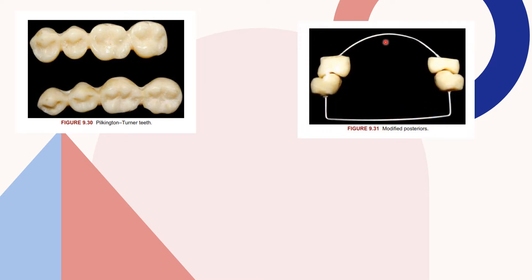These are the modified posteriors, designed by French. The upper posterior teeth were similar to the channel teeth, but with very shallow buccolingual inclines, and the lower teeth had a sloping buccal surface that was placed below the occlusion. Only the lingual cusp contacted the groove in the upper, and this was claimed to direct the forces lingually, stabilizing the lower ridge.